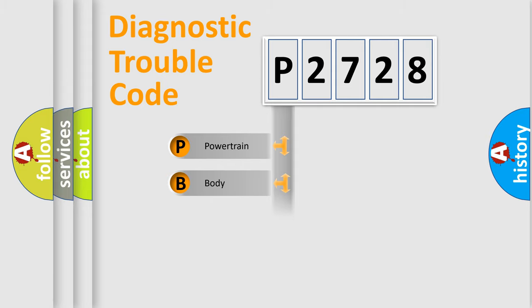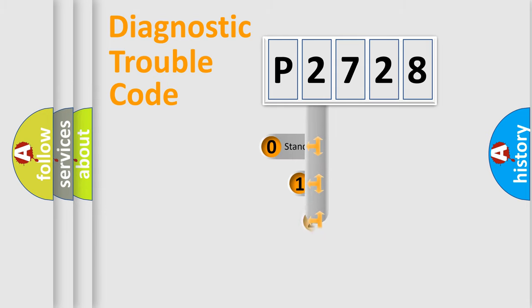Powertrain, Body, Chassis, and Network. This distribution is defined in the first character code.